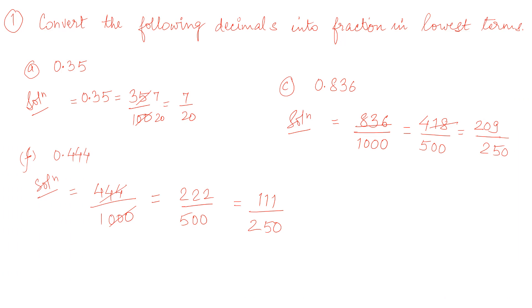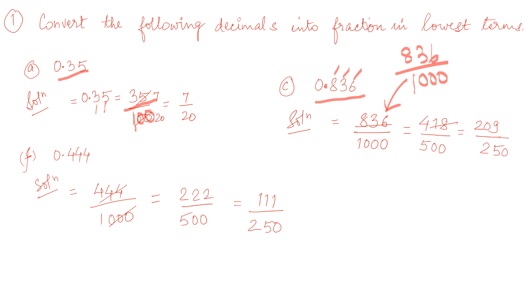Convert the following decimals into fractions in lowest terms. For 0.35: write 35, denominator 1, then two digits after decimal so add two zeros — 35/100 — which reduces to 7/20. For 0.836: write 836, denominator 1, three digits after decimal so add three zeros — 836/1000 — then reduce to get the answer. For 0.444: it will be 444/1000 because there are three digits after decimal; reduce to get the answer.